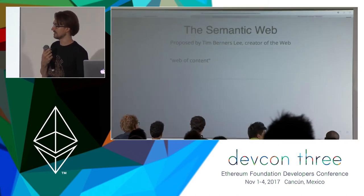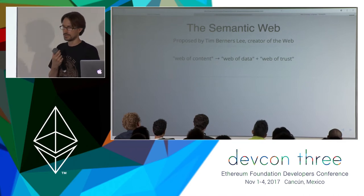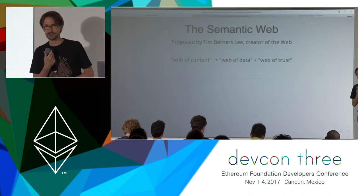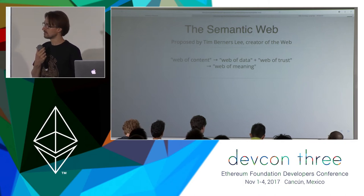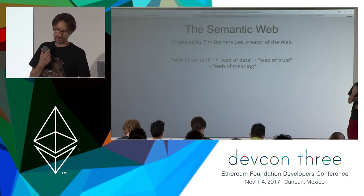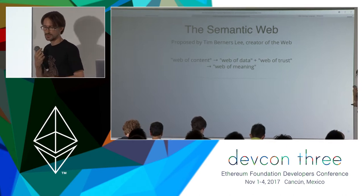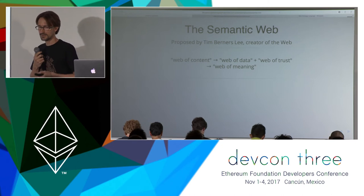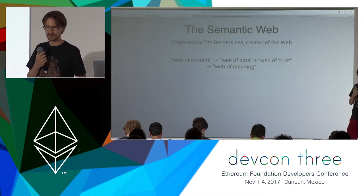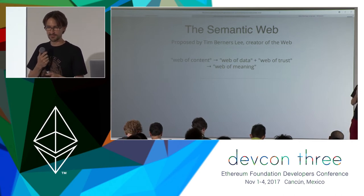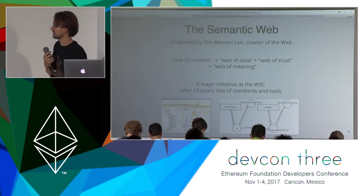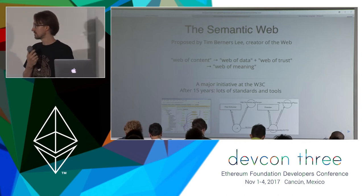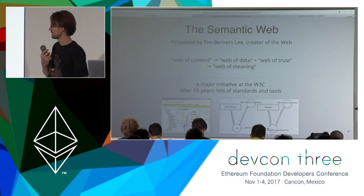He started with a web of content, which is the current web, and then expanded it to be a web of data and a web of trust. As we all know, we're solving the trust aspect of this. The deeper sense is that once you establish all this context and know the source, you create something where all the information is connected in a very formal way. That made a lot of people very excited, and the W3C developed the standards of the semantic web.